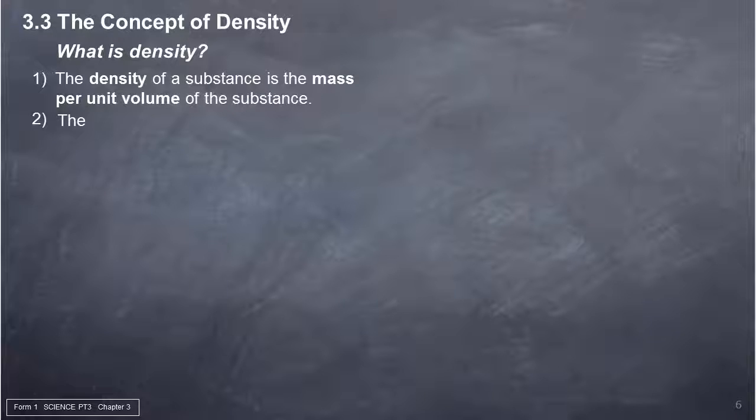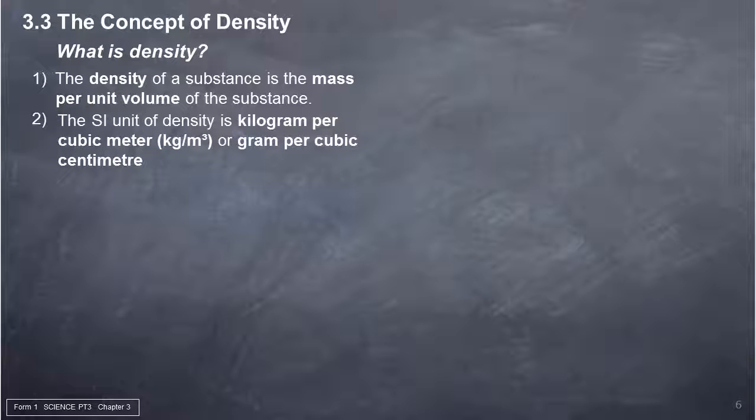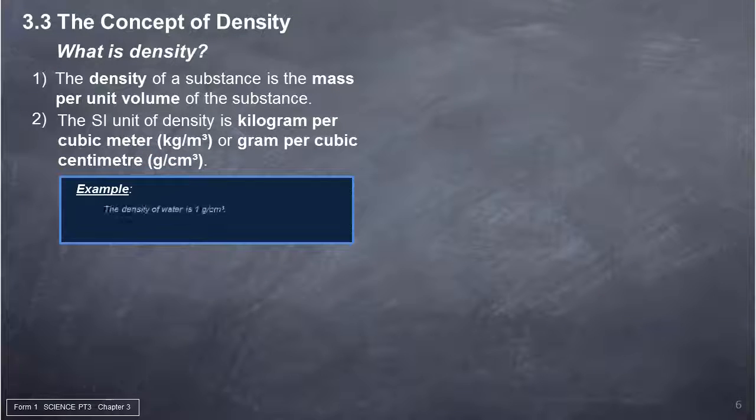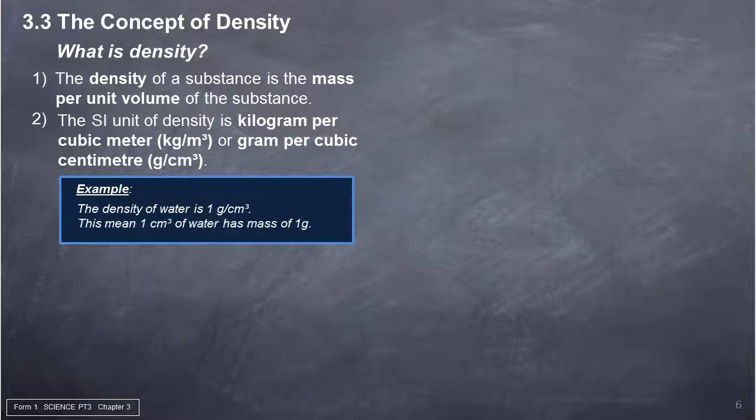2. The SI unit of density is kilogram per cubic meter (kg/m³) or gram per cubic centimeter (g/cm³). Example: The density of water is 1 g/cm³. This means 1 cubic centimeter of water has mass of 1 gram.